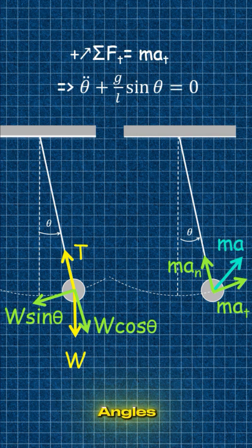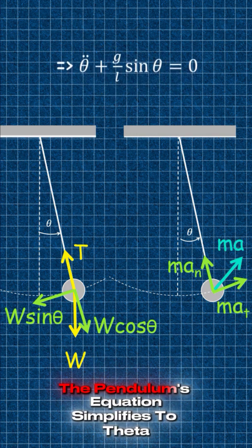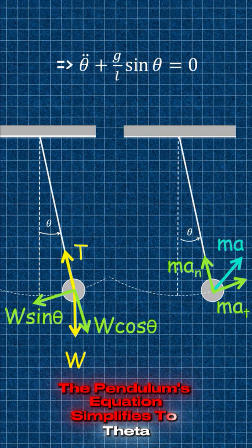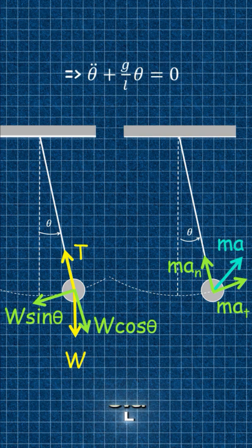For small angles, sine theta approximately equals theta. So the pendulum's equation simplifies to theta double dot plus g over l theta equals zero.